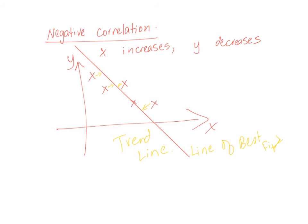So we are trying to look for the best line of fit, line of best fit or it's called the trend line. So this is a negative correlation - x increases, y decreases.